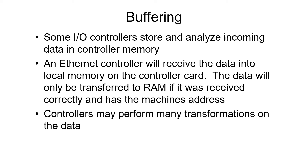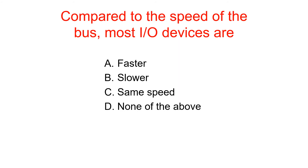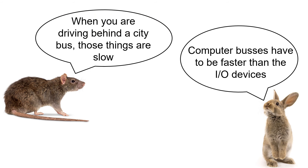Some controllers have to transform the data in many ways so that it can be used by the computer system. The answer is B — almost all devices are slower than the bus. Computer buses have to be faster than all I/O devices.